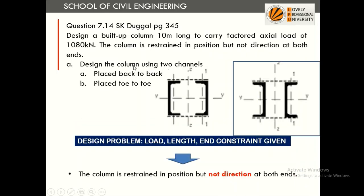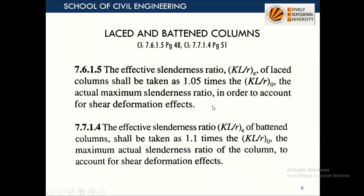Two options are given: channels placed back-to-back and toe-to-toe. This is a design problem — only the load is given, so we must design it. For laced and batten columns, as per IS 800 page 48 and 51, the effective slenderness ratio of a laced column shall be taken as 1.05 times the actual maximum slenderness ratio, to account for shear deformation.